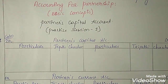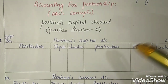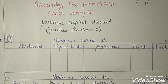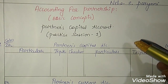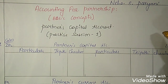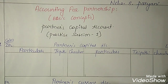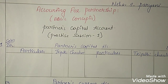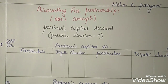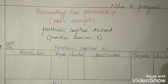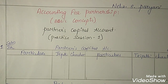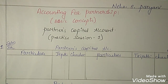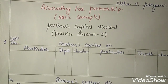In the fixed capital method, we will prepare two different accounts — one is the capital account and another one is the current account. The capital in the capital account will not change; the capitals here will be fixed. In the fluctuating capital method, we will prepare only one partners capital account. It is the combination of the capital account and current account of the fixed method. If you want to know its format, you can check out my explanation video; its link will be provided in the description box below and at the end of this video.